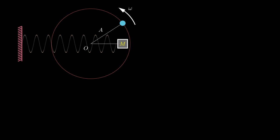In this diagram, the illustration depicts the position of the spring-mass system at a specific moment in time. The radius of the path along which the sphere is rotating is denoted by A, and this is equivalent to the maximum displacement of the mass from the equilibrium position O. At this particular moment, the sphere forms an angle theta with the horizontal axis. As time progresses, theta is changing, so we can express theta as a function of time. We denote the displacement of the mass from its equilibrium position as x(t).